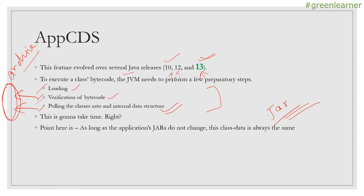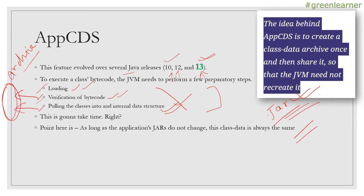Application CDS defines the steps that you can perform to archive the classes, and subsequently, when you are executing the jar file, you do not need to perform loading, verification, and pulling into data structure repeatedly - unless your jar is changing. So this is the feature that takes advantage of these repetitive steps. The idea behind App CDS is to create a class data archive once and then share it so that the JVM need not recreate it. This feature has been around for the last two or three releases with many enhancements.